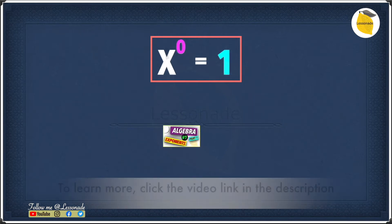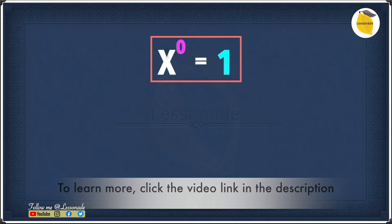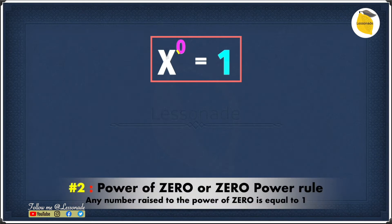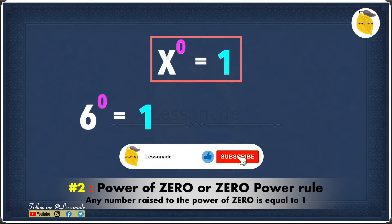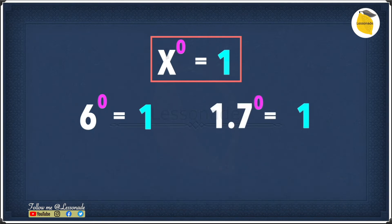Let's have a look at another rule: x to the power of zero equals one. This rule is called the power of zero, and it states that any number raised to the power of zero is one. For example, 6 raised to the power of zero will be one. And 1.7 raised to the power of zero will also be one for the same reason.